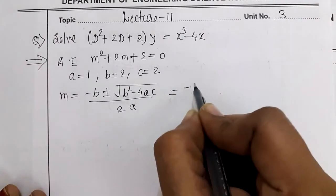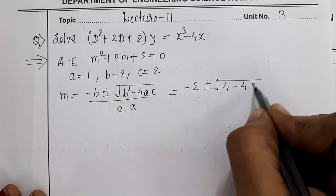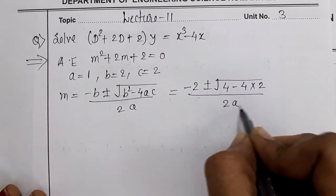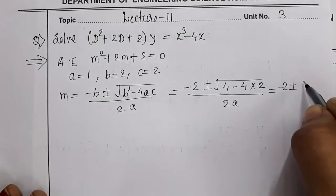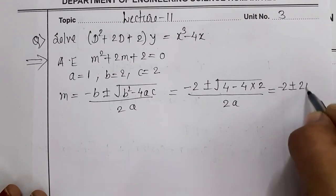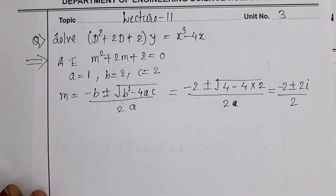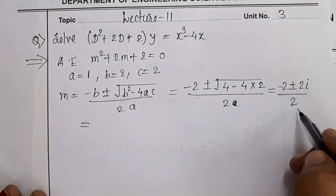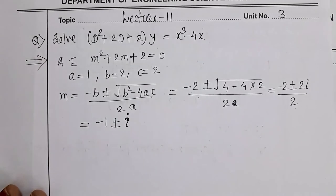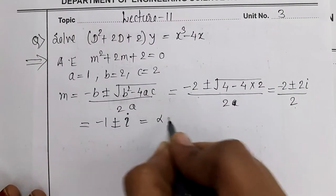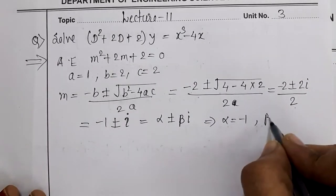Substituting: m = (-2 ± √(4 - 4×1×2)) / 2 = (-2 ± √(4 - 8)) / 2 = (-2 ± √(-4)) / 2 = (-2 ± 2i) / 2 = -1 ± i. Comparing with α ± βi, we get α = -1 and β = 1.